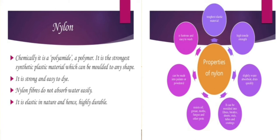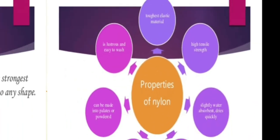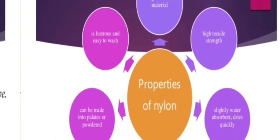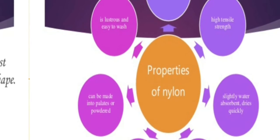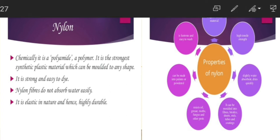The second fiber is nylon — polyamide. It is the strongest fiber. It does not absorb water; other fibers absorb water but less, but nylon does not absorb water at all, which is why we use it in raincoats. What are the properties of nylon? Tough, elastic, lustrous, tensile — meaning we can stretch it. It can also be made into plates and powders.